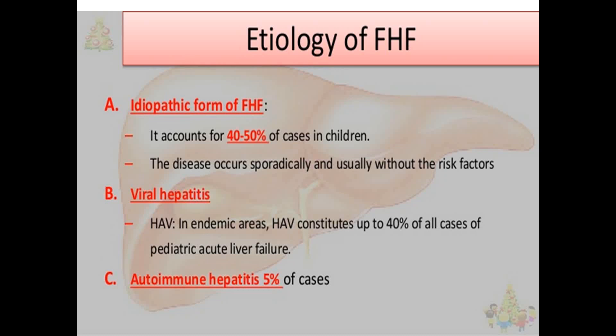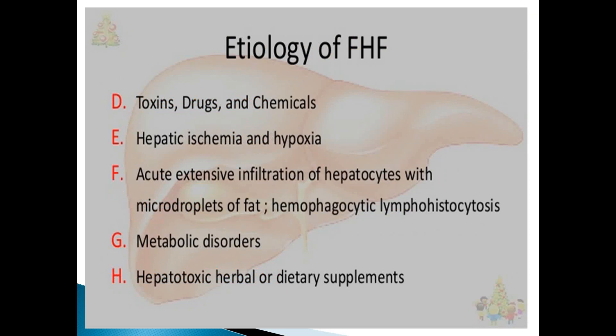Autoimmune hepatitis accounts for 5% of cases. High alcohol intake can cause liver damage. It can also be toxins, drugs, chemicals, hepatic ischemia, hypoxia, acute extensive infiltration of hepatocytes with micro droplets of fat, and hemophagocytic lymphohistiocytosis. Fatty liver infiltration — it may be non-alcoholic fatty liver disease or hepatic steatohepatitis with fat infiltration. Metabolic disorders with severe intensity can cause this disease. Hepatotoxic herbal or dietary supplements taken without realizing their contents can also be a cause.